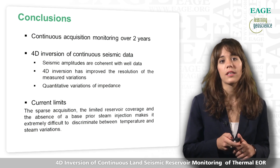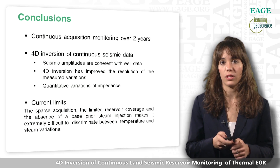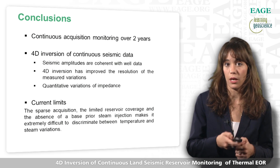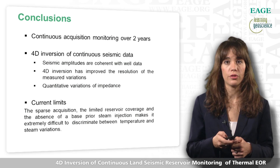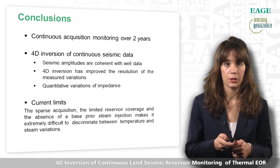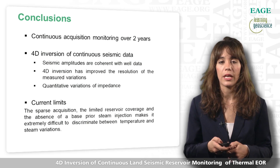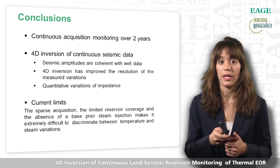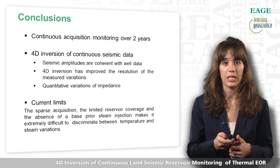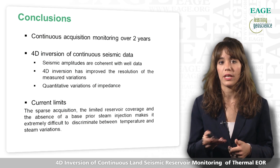To summarize: a continuous seismic monitoring system was installed in Schoonebeek and recorded continuously for two years. The 4D inversion of the continuous seismic data shows consistent seismic amplitudes with the well data. The 4D inversion improved the resolution of the measured variation to 4 ms at the top of the reservoir, matched with well measurements, and yielded quantitative values of acoustic impedance. Going further to interpret acoustic impedance in terms of temperature and steam variation is of interest, but current limits — sparse acquisition, limited reservoir coverage, and the absence of a base prior to steam injection for the 3D monitoring — make it extremely difficult to discriminate between temperature and steam variation.